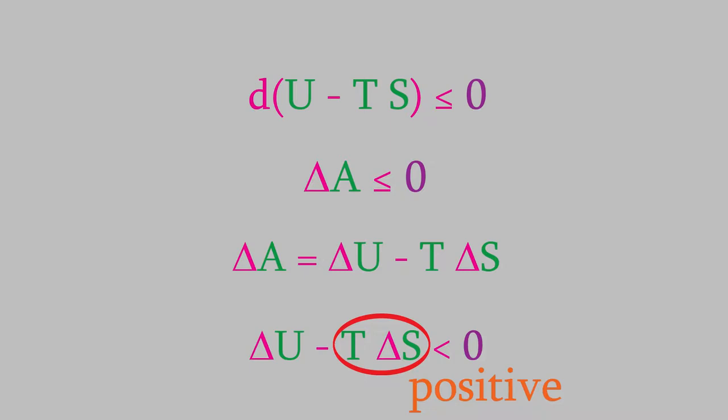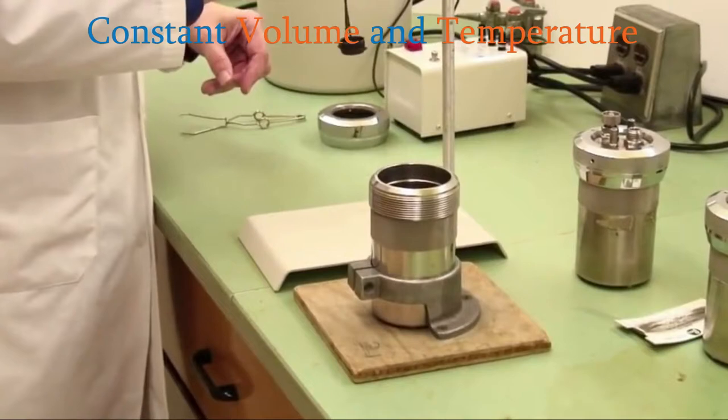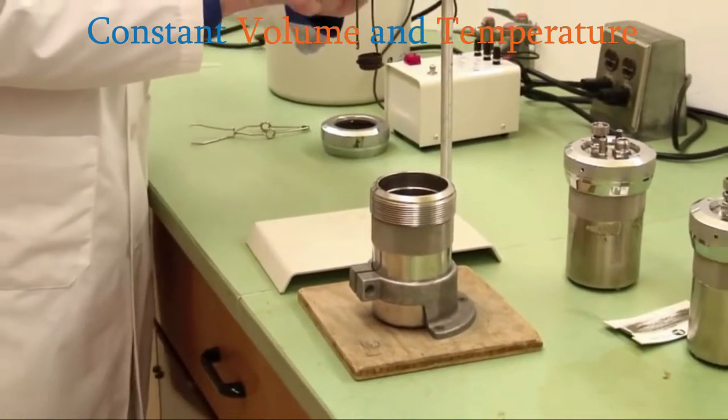So the Helmholtz free energy gives us some useful information about the spontaneity of a chemical reaction. But it has one drawback. It's meant to be used for systems where the volume and temperature are both constant. Unfortunately, constant volume processes are fairly rare. That's the situation we have when we do a bomb calorimetry experiment. But other than that, we don't see constant volume processes very often.